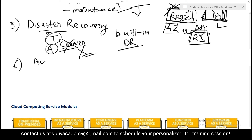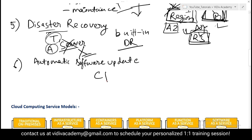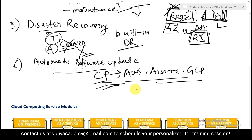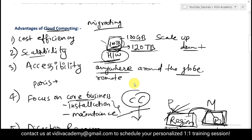The sixth advantage is automatic software updates. Software updates happen automatically — you don't have to worry about anything. Cloud providers like AWS, Azure, GCP, and others take care of everything. These are the key benefits of using cloud computing over on-premise.